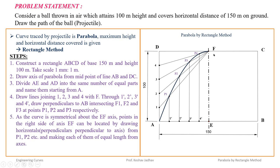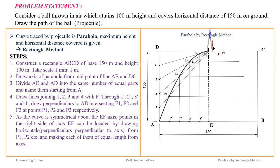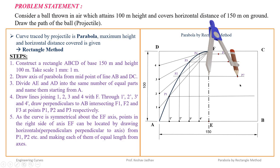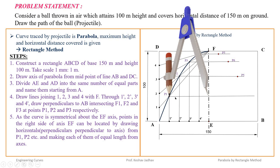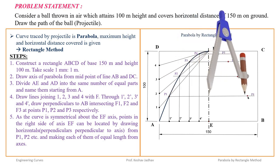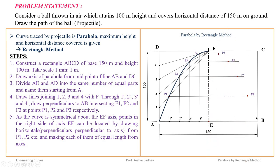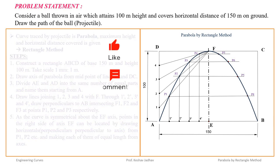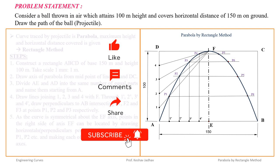Draw horizontal lines from each point. Then using a compass, measure the distance of each point on the left side of the axis and mark the corresponding point on the right side of axis EF. This gives points P5, P6, P7, and P8 on the right side. Connect all these points with a smooth curve to complete the full parabolic curve.